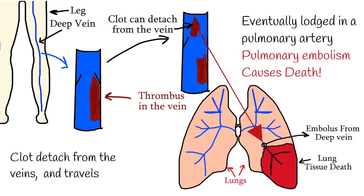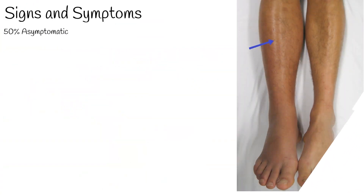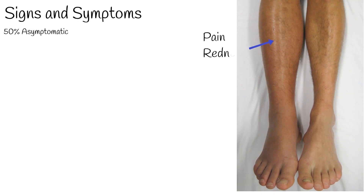Sometimes deep vein thrombosis is asymptomatic — patients have no complaints or symptoms. But in almost half of cases, patients have leg pain. The skin is red and hot.